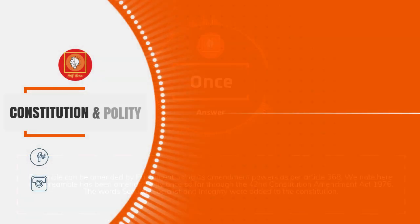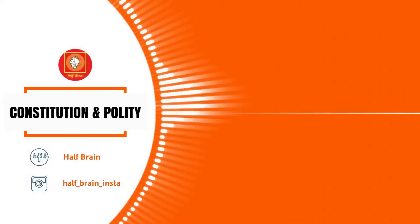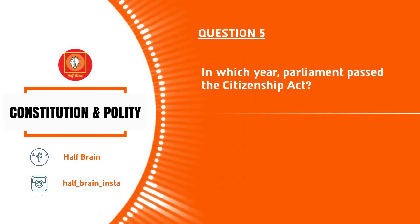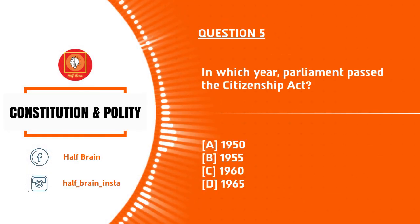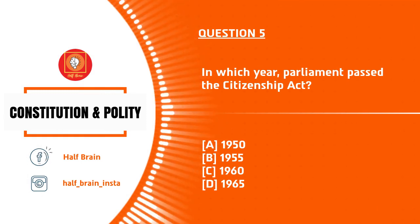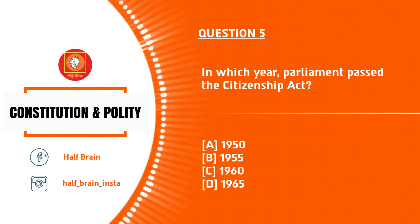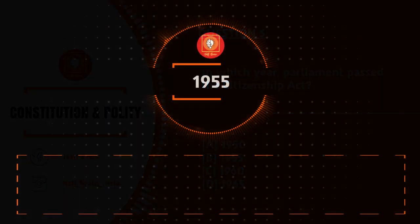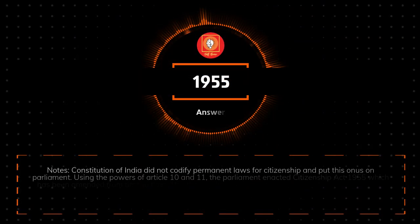Question number 5: In which year did Parliament pass the Citizenship Act? Options are 1950, 1955, 1960, and 1965. The answer is 1955.